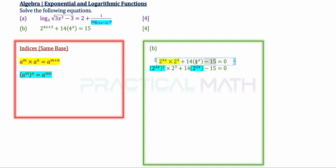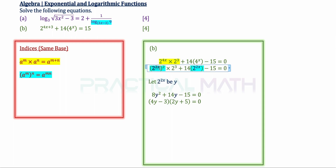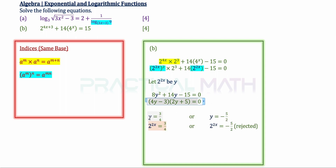Now we have a quadratic in 2 to the power of 2x. We apply a substitution: let y equal 2 to the power of 2x. The equation becomes 8y squared plus 14y minus 15 equals 0. Using cross-factorization to solve the quadratic, we get y equals 3/4 or y equals negative 5/2.